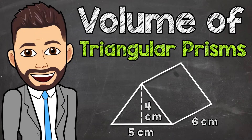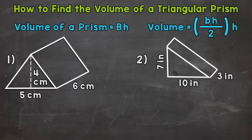Welcome to Math with Mr. J. In this video, I'm going to cover how to find the volume of a triangular prism. Now remember, the volume is the amount of space an object takes up. And for any prism, we can use the formula: the area of the base times the height.